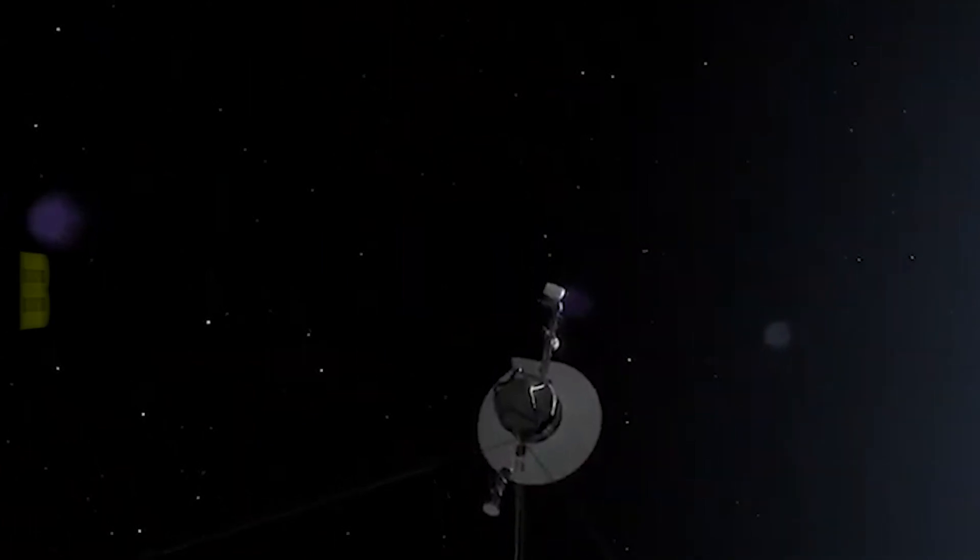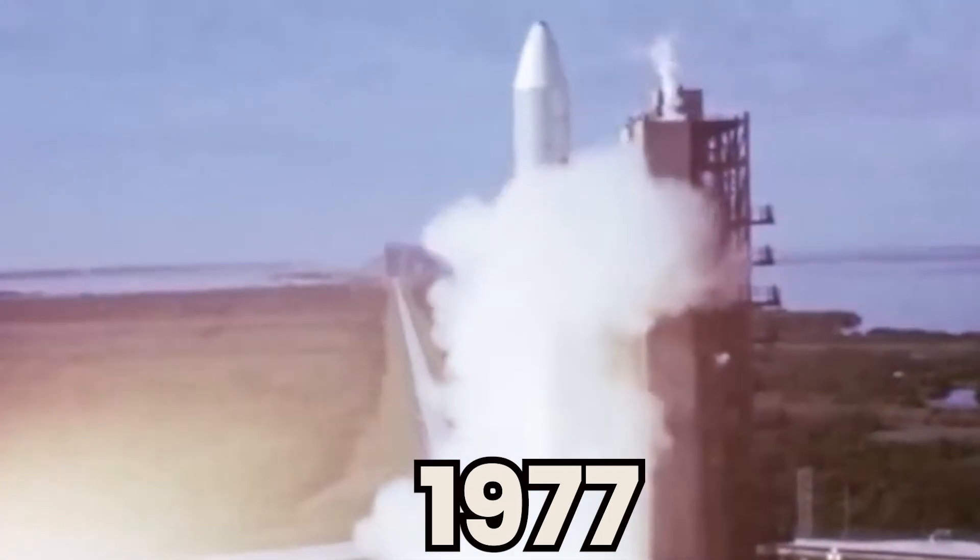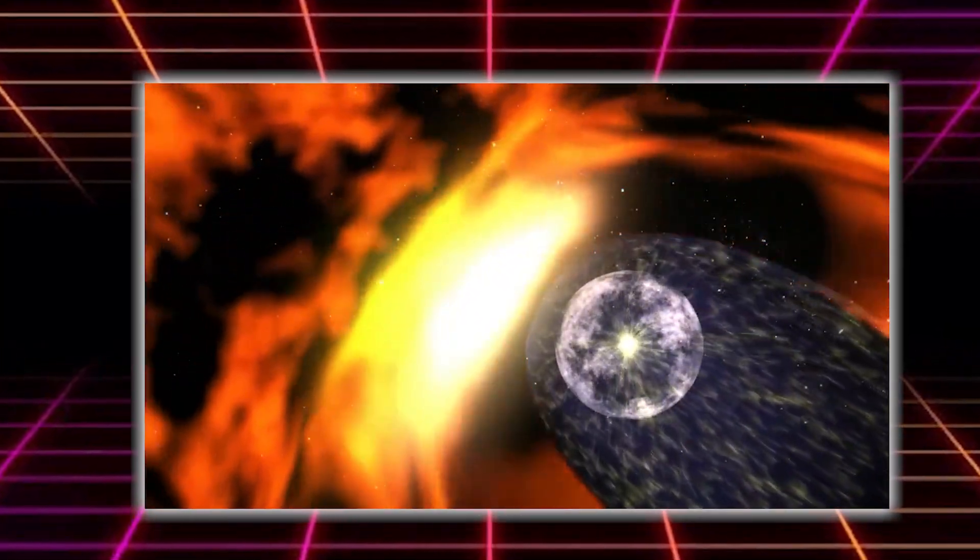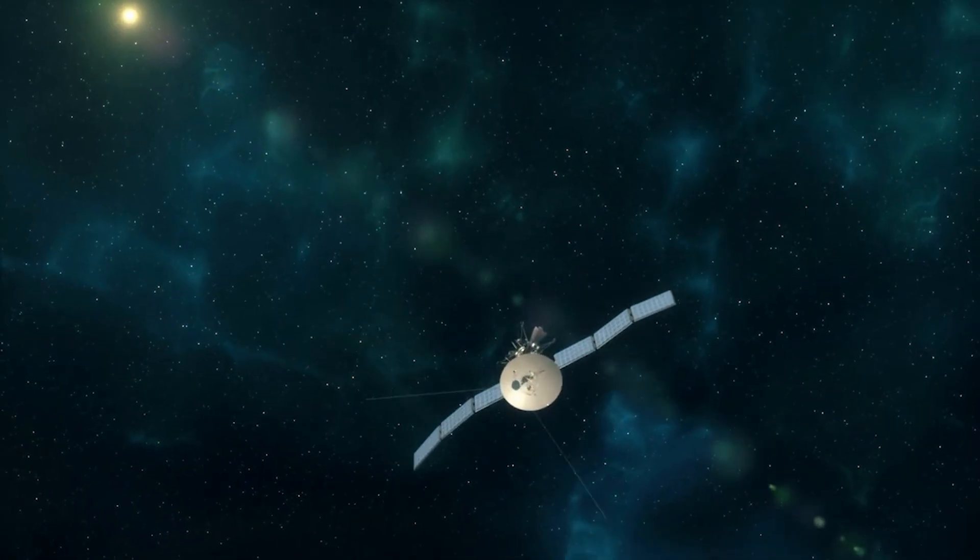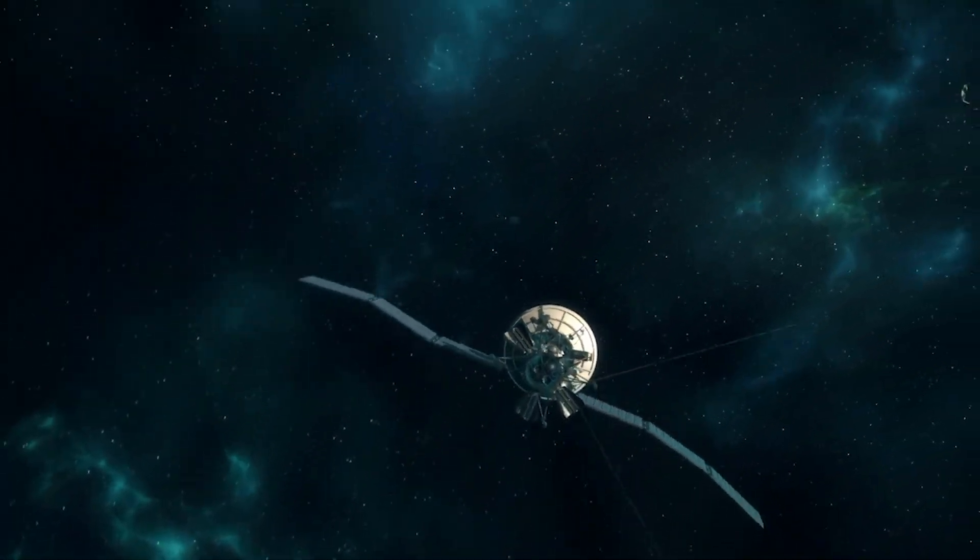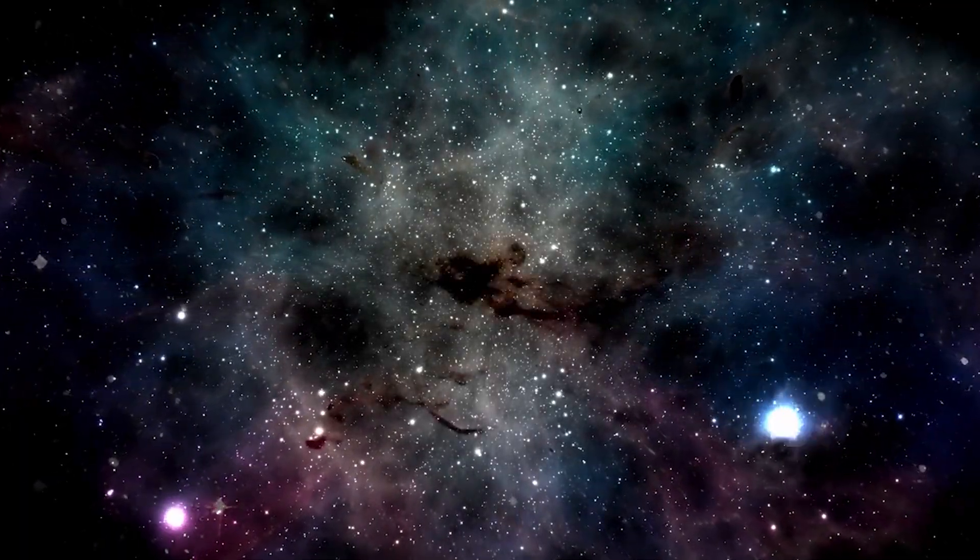For decades, the spacecraft has coasted silently through the interstellar medium, its signals growing ever fainter as it drifts more than 15 billion miles away from Earth. Voyager 1 has long since passed beyond the influence of our sun's heliosphere, entering a dark, icy, and incomprehensibly vast region that was once believed to be empty. But emptiness, as it turns out, is a deceptive veil.